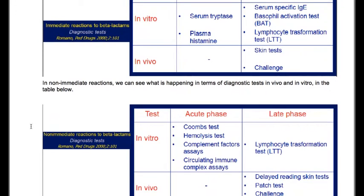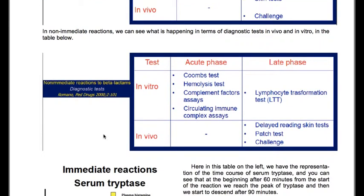For immediate reactions to beta-lactams in vitro, in the acute phase we can use Coombs test, hemolysis test, complement factors assays, and circulating immune complex assays. In the late phase in vitro we can use lymphocyte transformation test; in vivo, delayed reading skin test, patch test, and challenge.